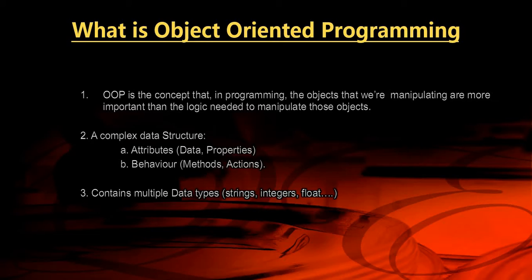The structure of object-oriented programming has a complex data structure containing properties — also referred to as attributes — and methods — also referred to as behaviors or actions. Attributes can be a set of variables, and behaviors can be functions. OOP also contains multiple data types like strings, integers, and floats.